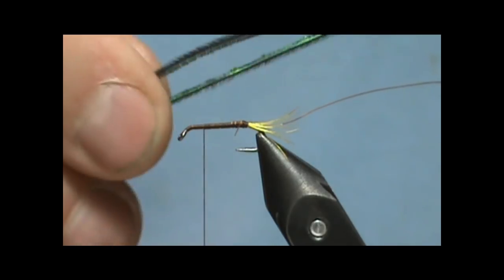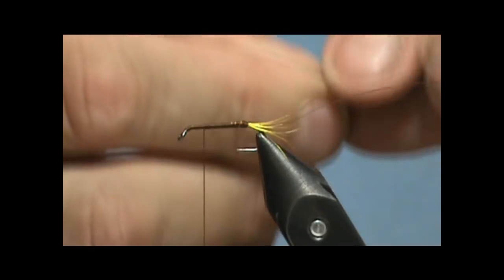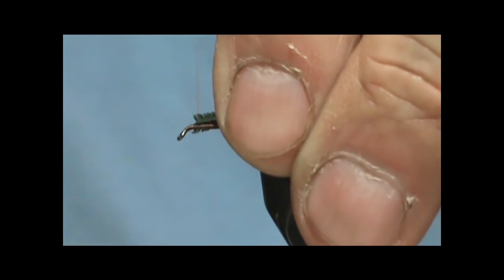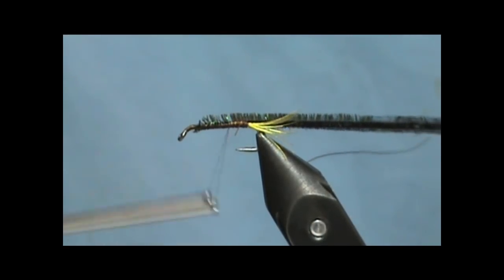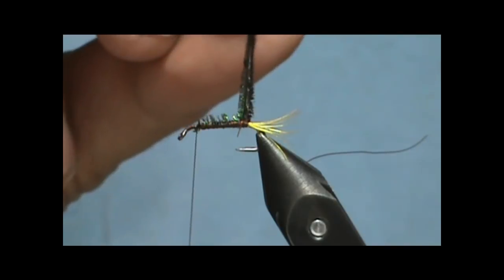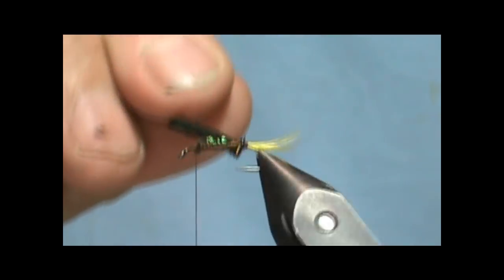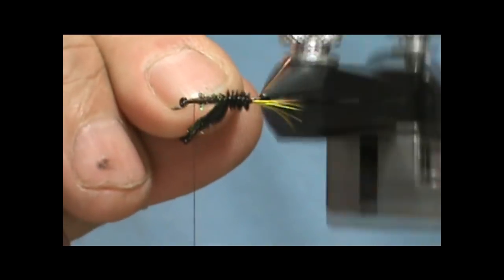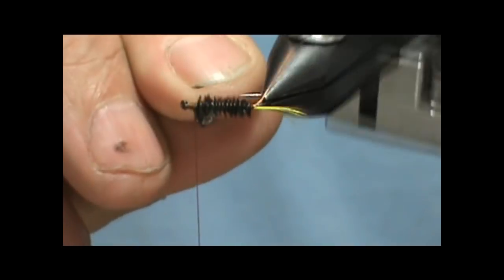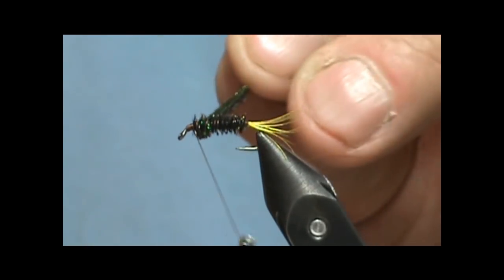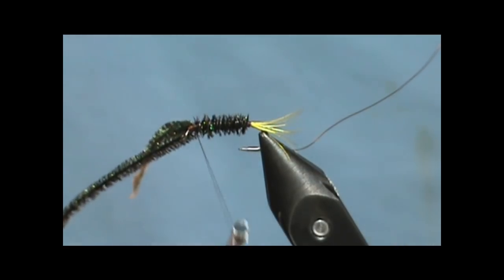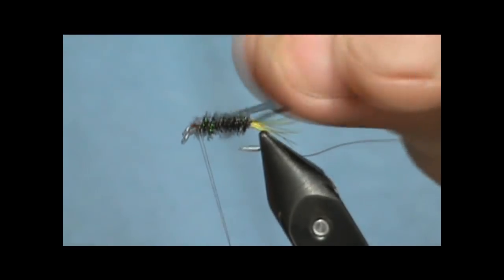Now for the body I have two pieces of peacock hurl and we're going to tie them in. We're going to wrap them back to the tail and bring the thread up forward. Now I'm going to use my rotary feature of the vise. Very smooth. And quickly bring that right up to the front. Now we're going to tie that off and we can break off the excess.